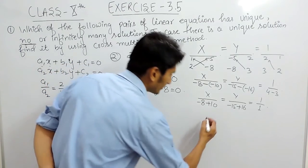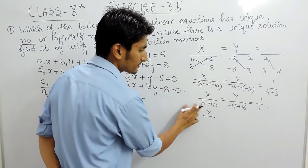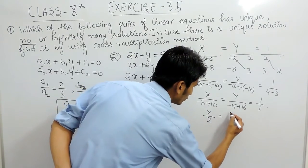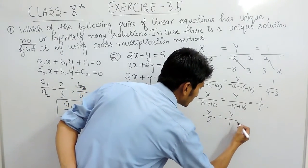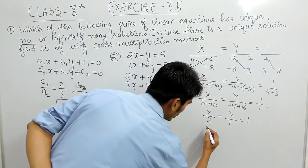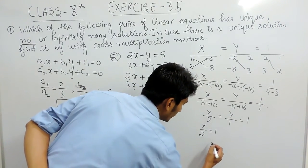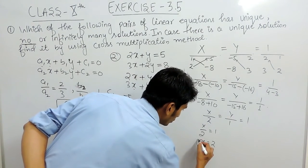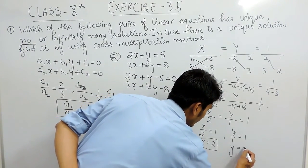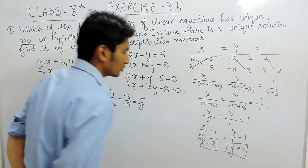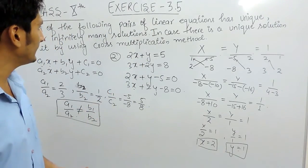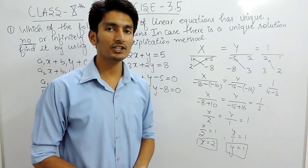Since all values are equal, x upon 2 equals 1, so x equals 2. Similarly, y upon 1 equals 1, so y equals 1. These are the values of x and y for this linear equation. This is the cross multiplication method.